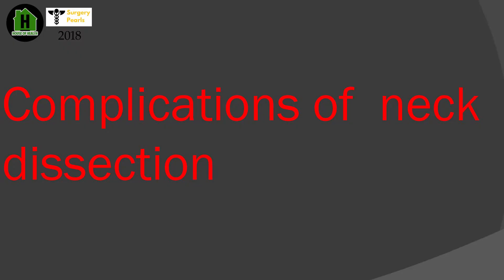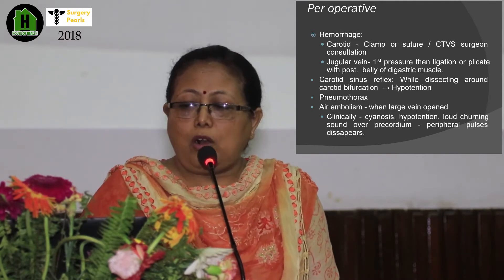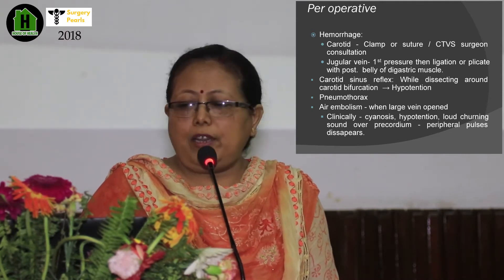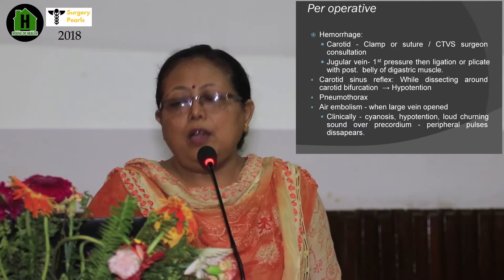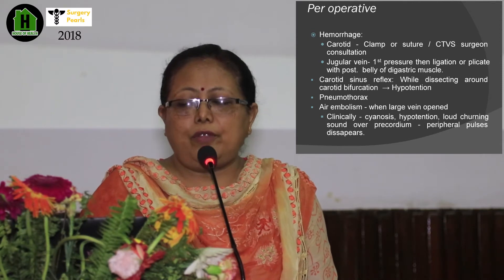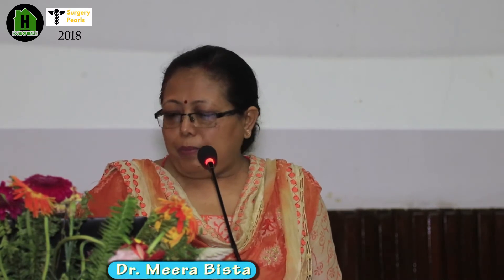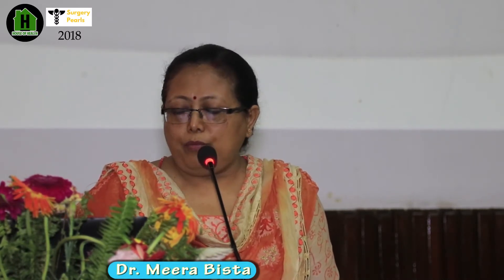Complications of neck dissection. Intraoperative: hemorrhage from arterial sources — clamp and suture, and a cardiothoracic surgeon should be called if there is major arterial hemorrhage. Jugular vein hemorrhage is managed by ligating with the posterior digastric. Carotid sinus reflex while dissecting around the carotid can cause hypotension — be careful when handling this area. Pneumothorax can occur. Air embolism: when large veins are opened, the patient will have sudden hypotension and peripheral pulses may disappear.